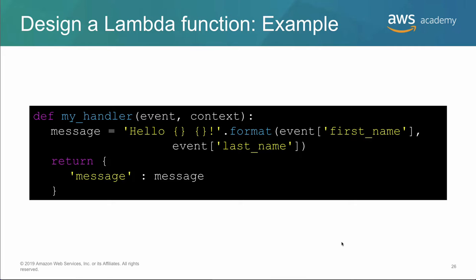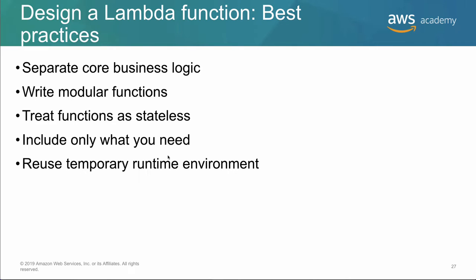A Lambda function takes input, does work, and returns a value. Best practices include: separating business logic, writing functions in a modular way, treating them as stateless, and only including libraries you actually need. Avoid putting unnecessary third-party libraries in, and reuse things like socket connections — you don't want to make new socket connections every time a Lambda is called.